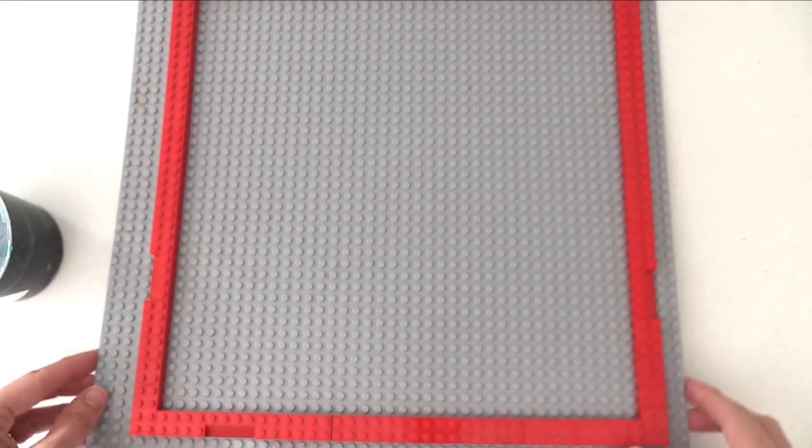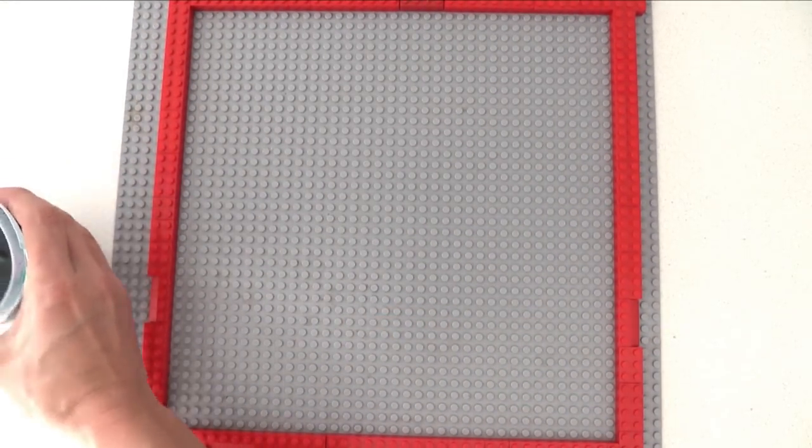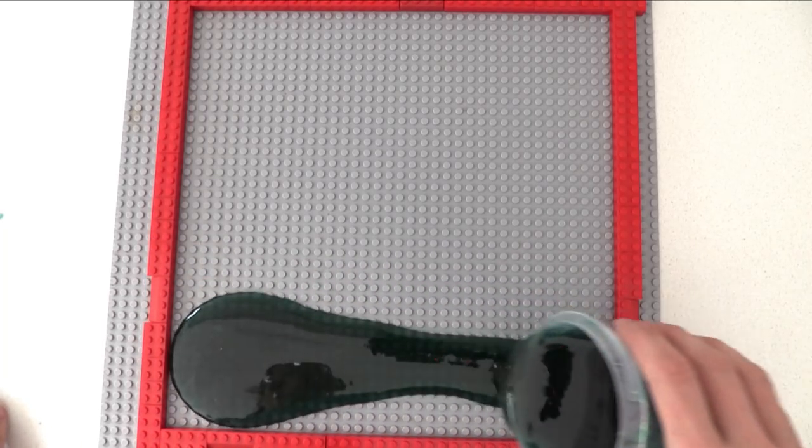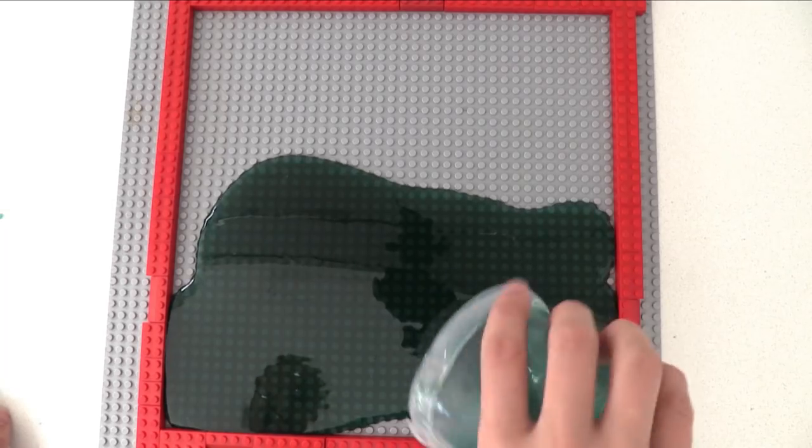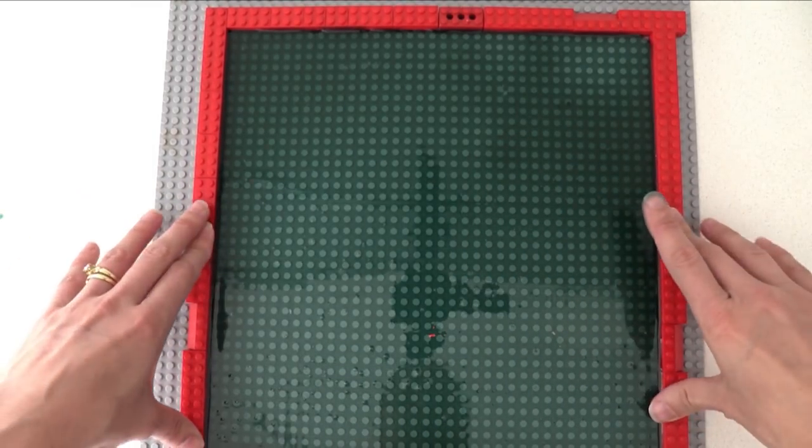Take a Lego baseboard and make a border around the edge using Lego bricks. Then heat up some reusable food grade molding gel. Pour it in and tip it and spread it until it goes all the way to the edges and then let that cool and set.